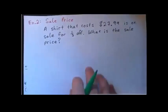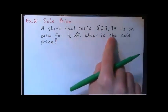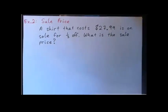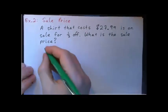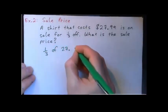Example 2: sale price. A shirt that costs twenty-seven ninety-nine is on sale for a third off. What is the sale price? Press pause and just have a stab at that — see if you can get the answer. So do you think we should get maybe one third of twenty-seven point ninety-nine?